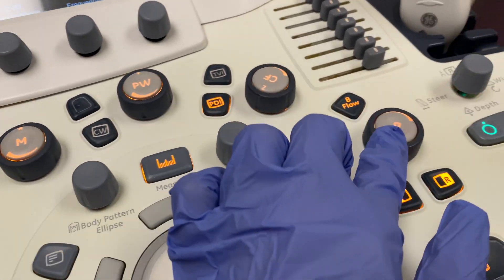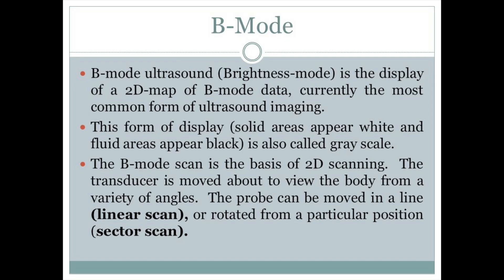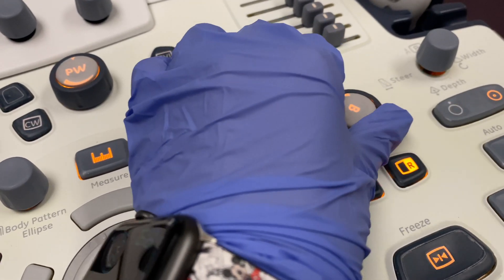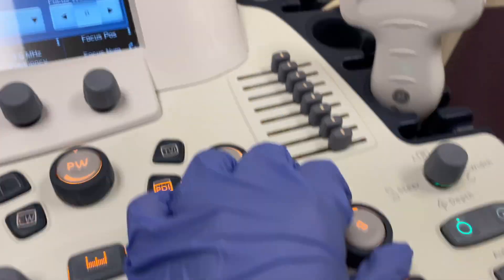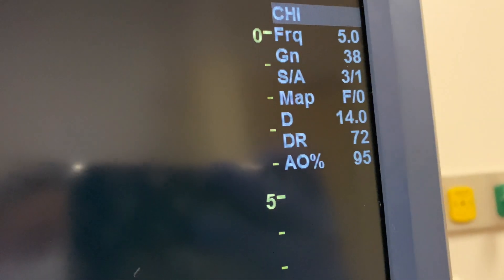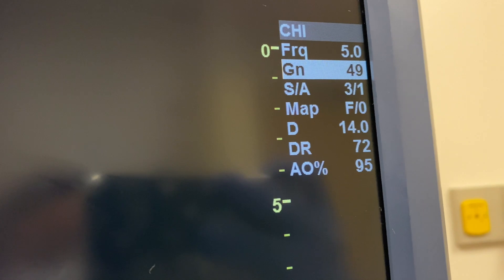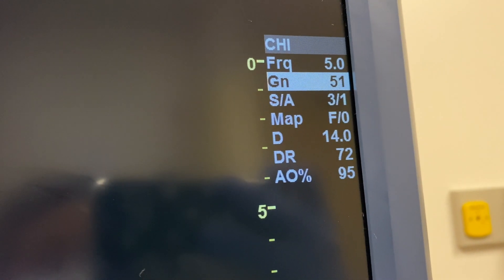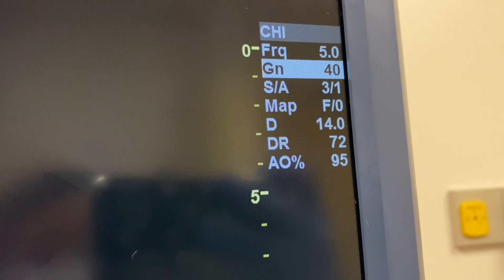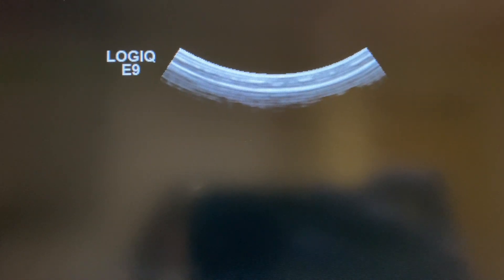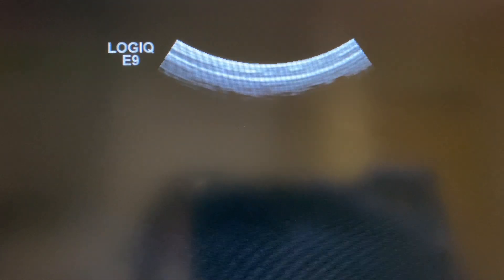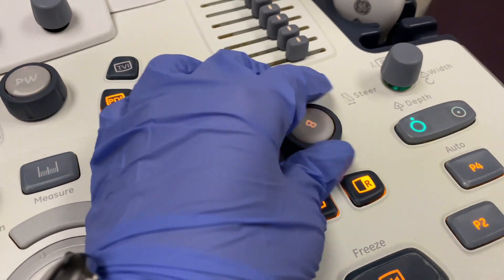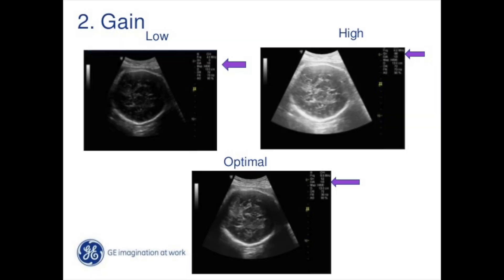We also use this button all the time — this is the beam mode. It kind of just resets everything to normal. It's also the gain; we turn the knob right and left to increase or decrease the gain. As I turn right, the gain goes up higher; as I turn left, the gain goes down lower. So if you need something brighter, we increase the gain, and if we need it to be darker, we decrease the gain.